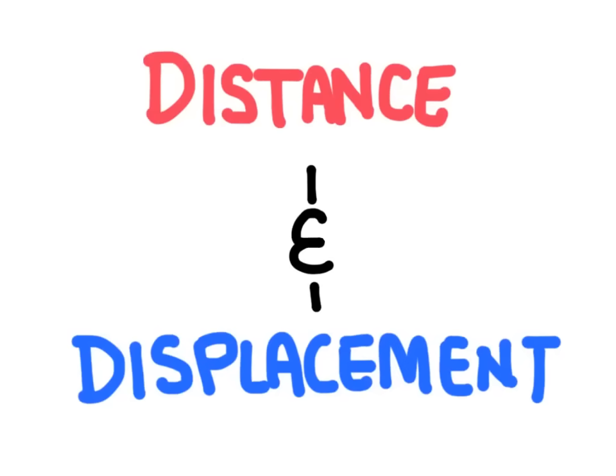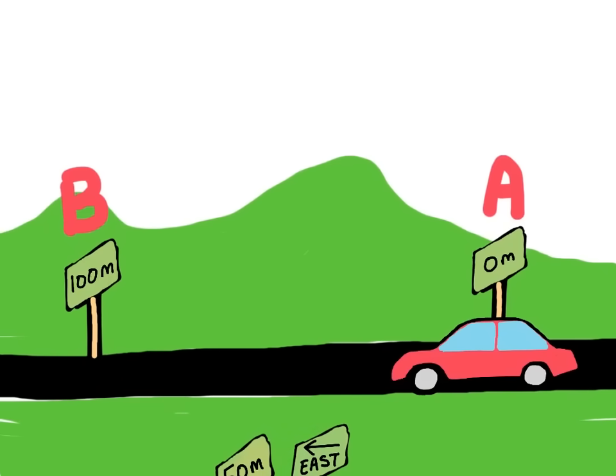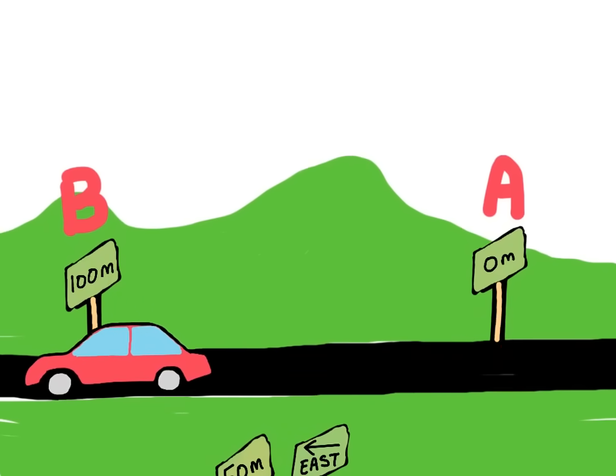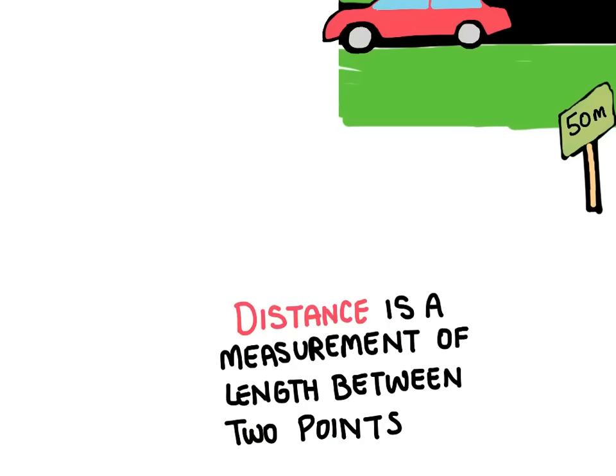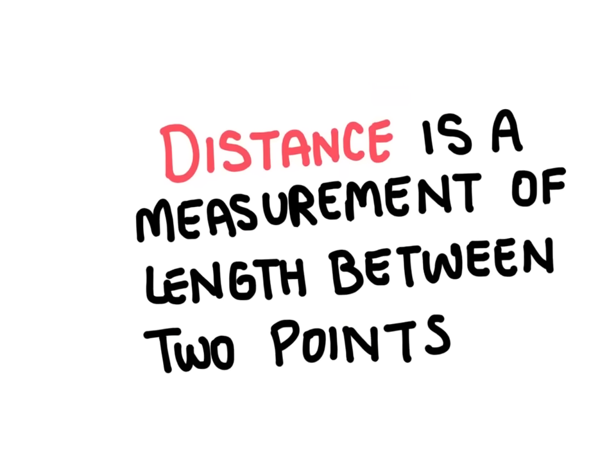In this video we're going to talk about the difference between distance and displacement. If this car moved from point A to point B, we could say it traveled a total distance of 100 meters. Distance is a measurement of the length between two points.